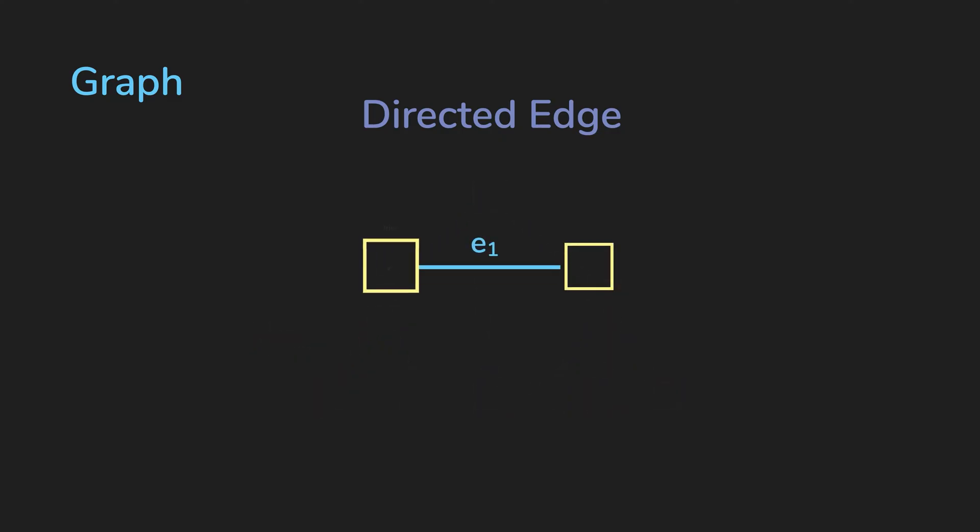A directed edge has an origin and a destination, and is commonly shown as an arrowhead to point to the destination. We usually denote a directed edge with round brackets, V1 and V2, where it's an edge from V1 to V2. Since the order of the elements inside the brackets matter, V2 V1 would mean a different thing. It would mean V2 is pointing at V1.